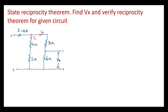Similarly, current I2 flows through the 3 ohm resistor, 3 ohm resistor, as well as the 6 ohm resistor. But Vx is the voltage across only the 6 ohm resistor. So to find the voltage across the 6 ohm resistor, first we need current I2 through the 6 ohm resistor. Let us find current I2 using the current division rule.